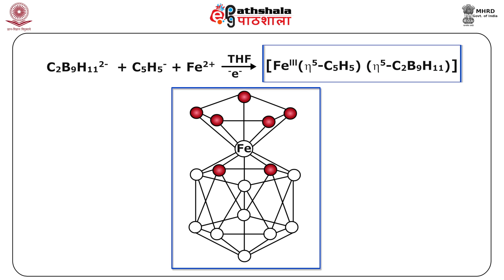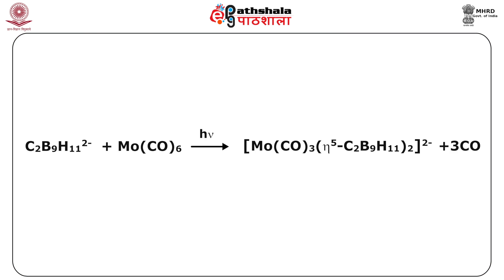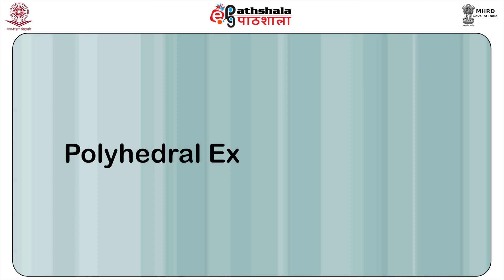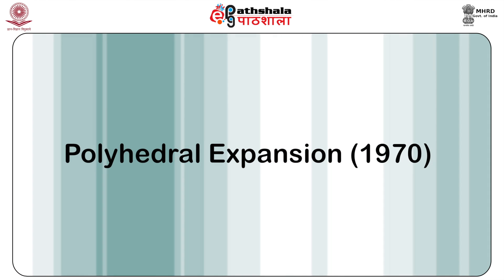Figure 2 shows the purple mixed sandwich complex of Fe(3+). The reaction is general and has been applied to many transition metals including chromium, molybdenum, tungsten, manganese, rhenium, nickel, palladium, copper, silver, gold, and beryllium. The use of metal carbonyls supplies the capping unit; for example, C2B9H11(2-) plus Mo(CO)6 in the presence of light gives Mo(CO)3(eta5-C2B9H11)(2-) plus 3 CO.